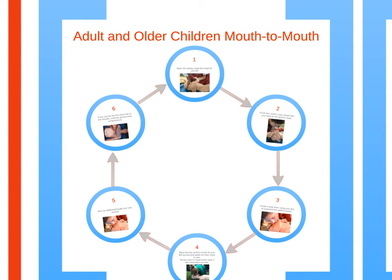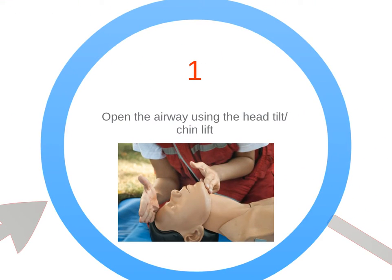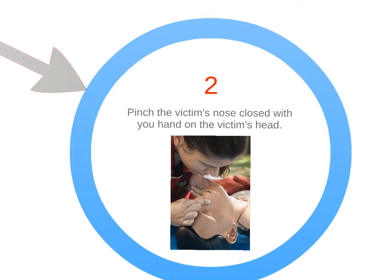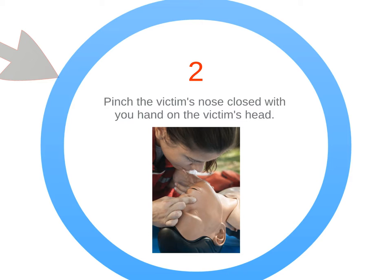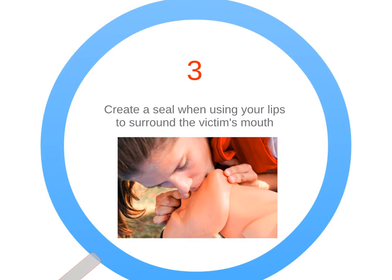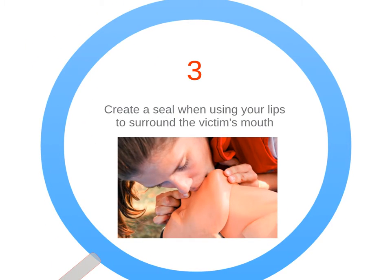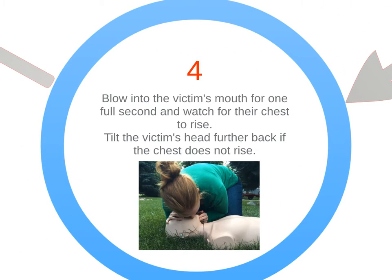The process of mouth-to-mouth ventilation is the same for adults and older children. First, open the airway with the usual head tilt-chin lift. Pinch the nose shut to prevent air from escaping when delivering the breaths. Make sure to create a seal with your lips around the victim's mouth. Blow into the victim's mouth and watch the chest. If it doesn't rise, you may need to re-tilt the head or unblock the airway.